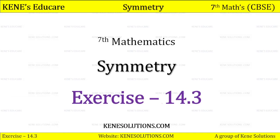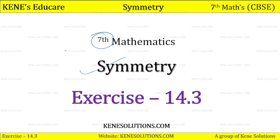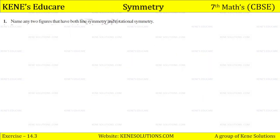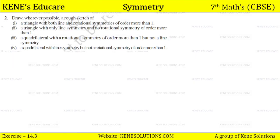Hello students, I welcome all of you to Kines Edu Care. Today we are solving Exercise number 14.3 of your chapter Symmetry. This chapter is from your seventh mathematics. Question number one: name any two figures that have both line of symmetry and rotational symmetry. The answer is an equilateral triangle, a square, and also a circle.